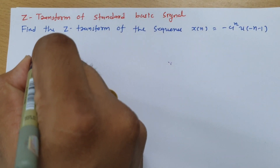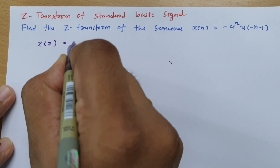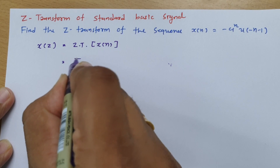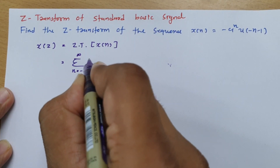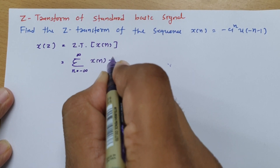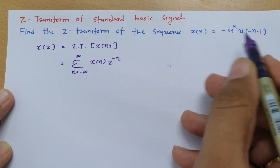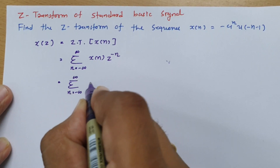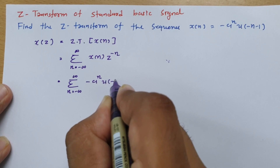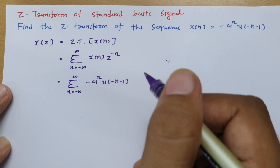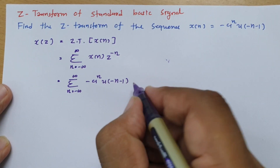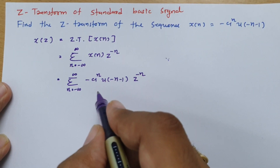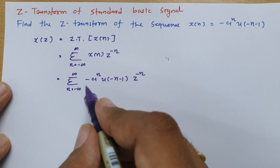The Z-transform X(z) is defined as the Z-transform of x(n). The basic formula is: summation from n = -∞ to ∞ of x(n) · z^(-n). Now we substitute x(n) = -a^n · u(-n-1) into this equation. Notice that u(-n-1) is present, and it will change the summation limits.